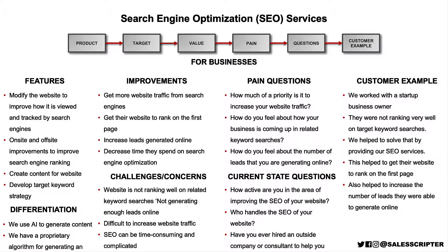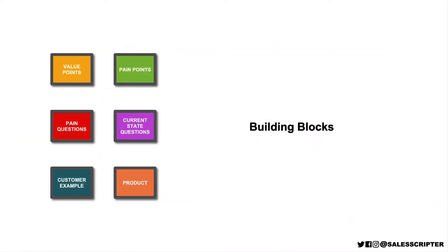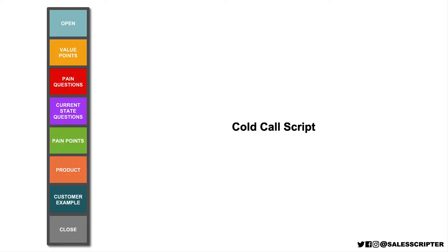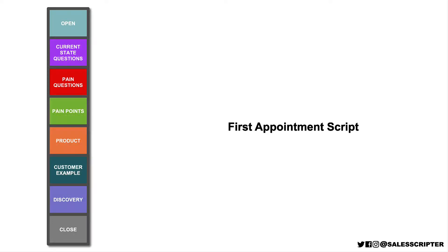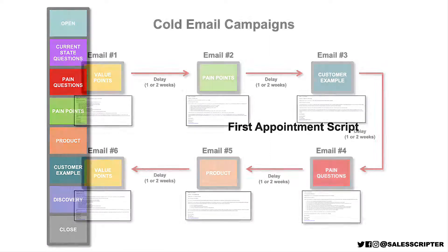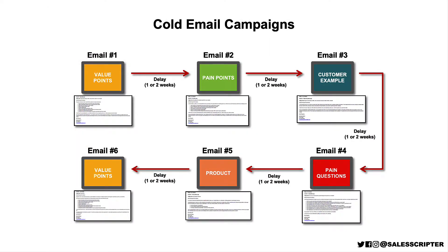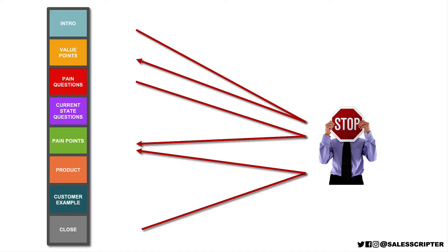That is the process I went through to create this sales message — and this is actually a sales message, not a sales script. Each of those steps creates what we refer to as building blocks: a value points building block, a pain points building block, pain questions building block, and so on. Once you have those building blocks, it's easy to mix and match them to create a variety of different documents — a cold call script, an appointment script, an email campaign, voicemail messages, and objection responses.